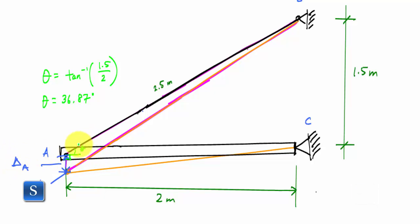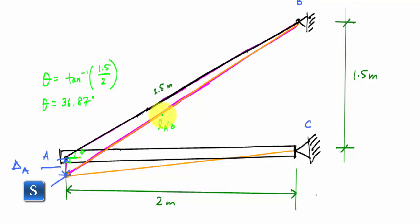If I know the elongation of rod AB, then I can get the elongation or the length of this new A prime B. I can determine this length right here, this L of A prime B. And if I can determine this length A prime B, then I know this angle. I know this side, this side. I could use a law of cosines and determine delta A.